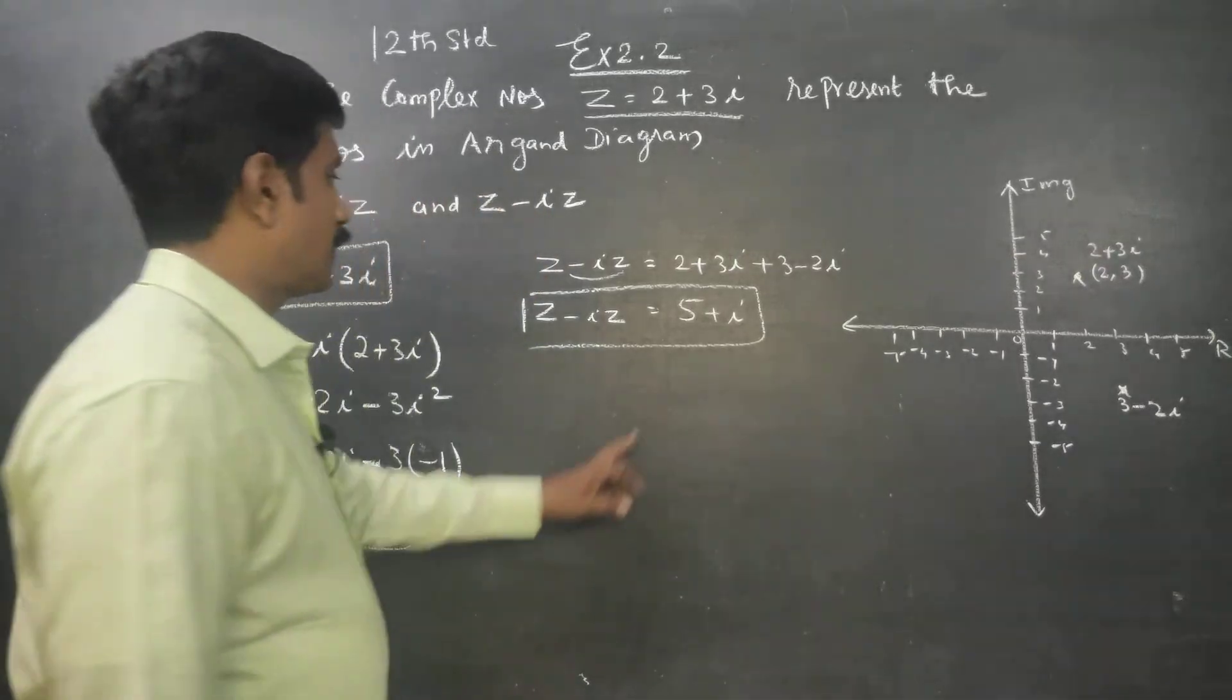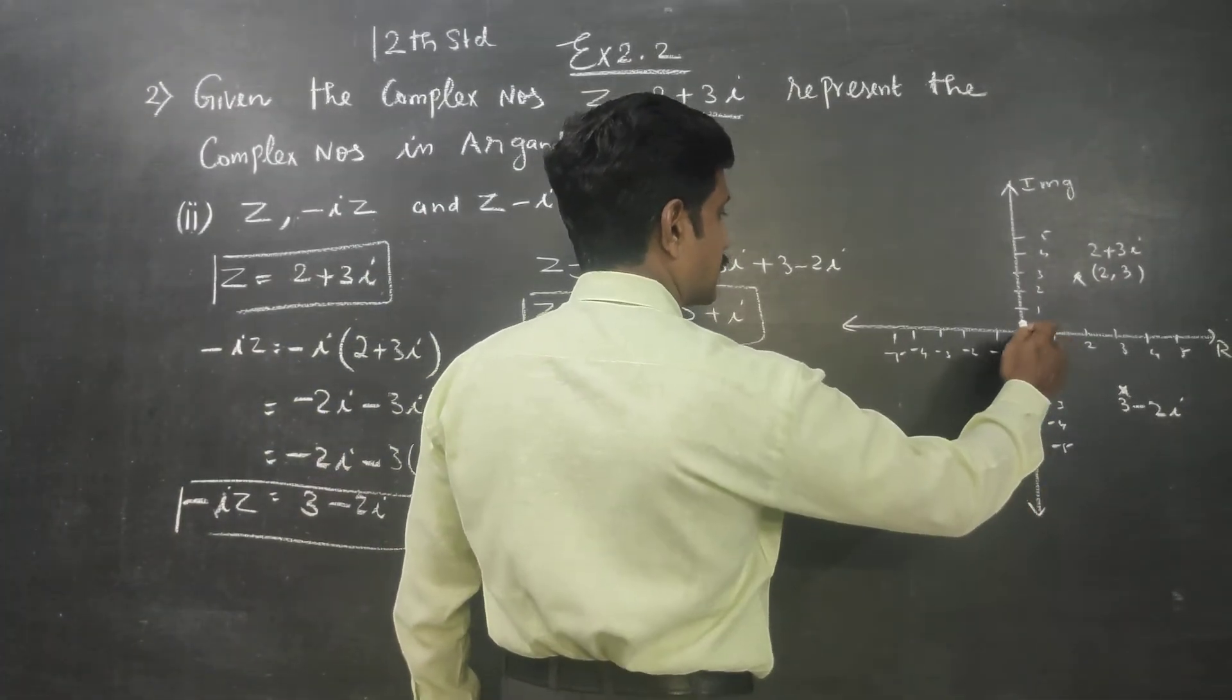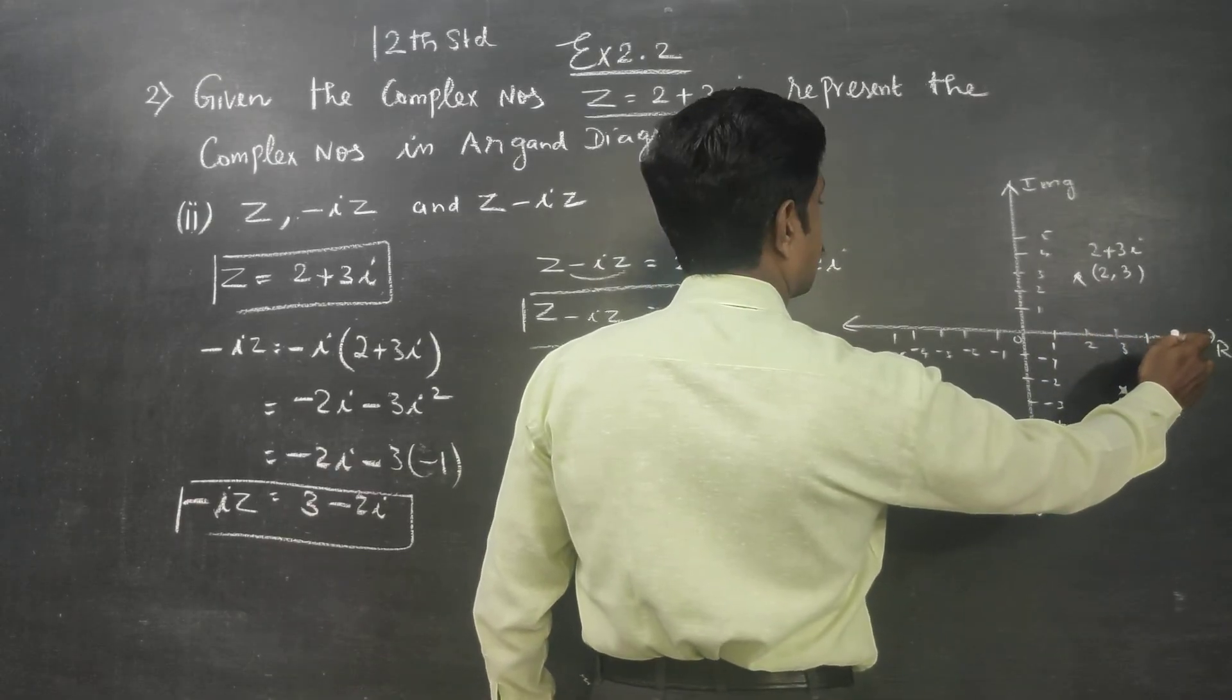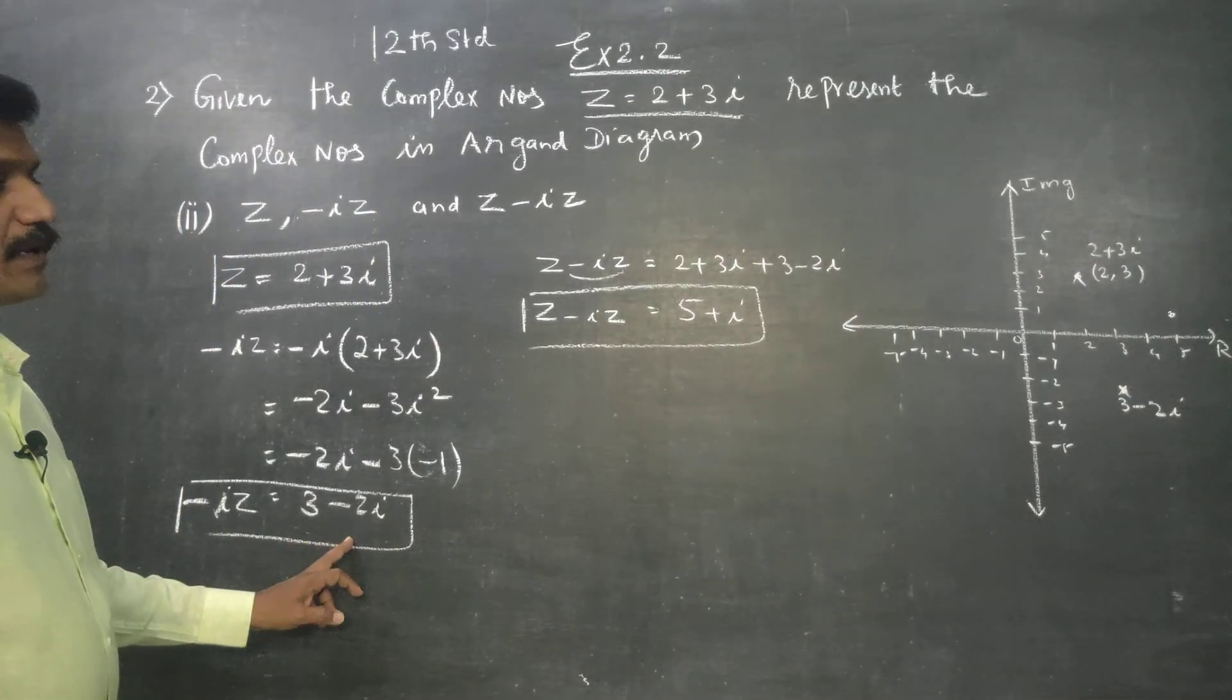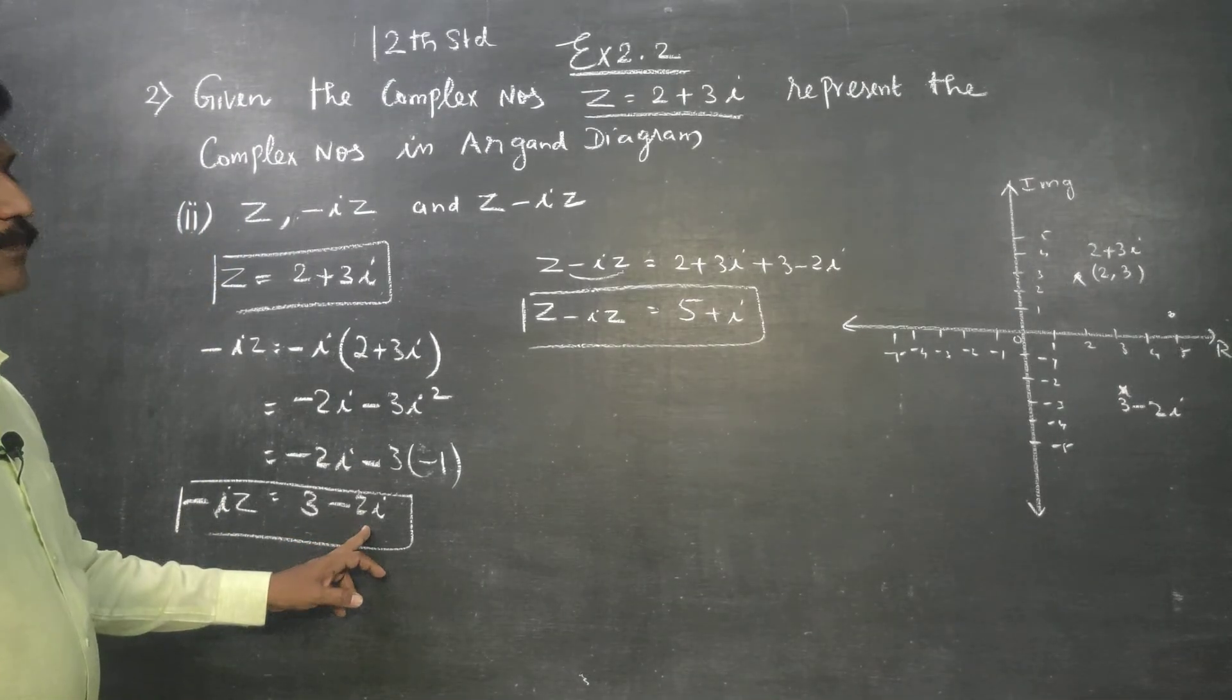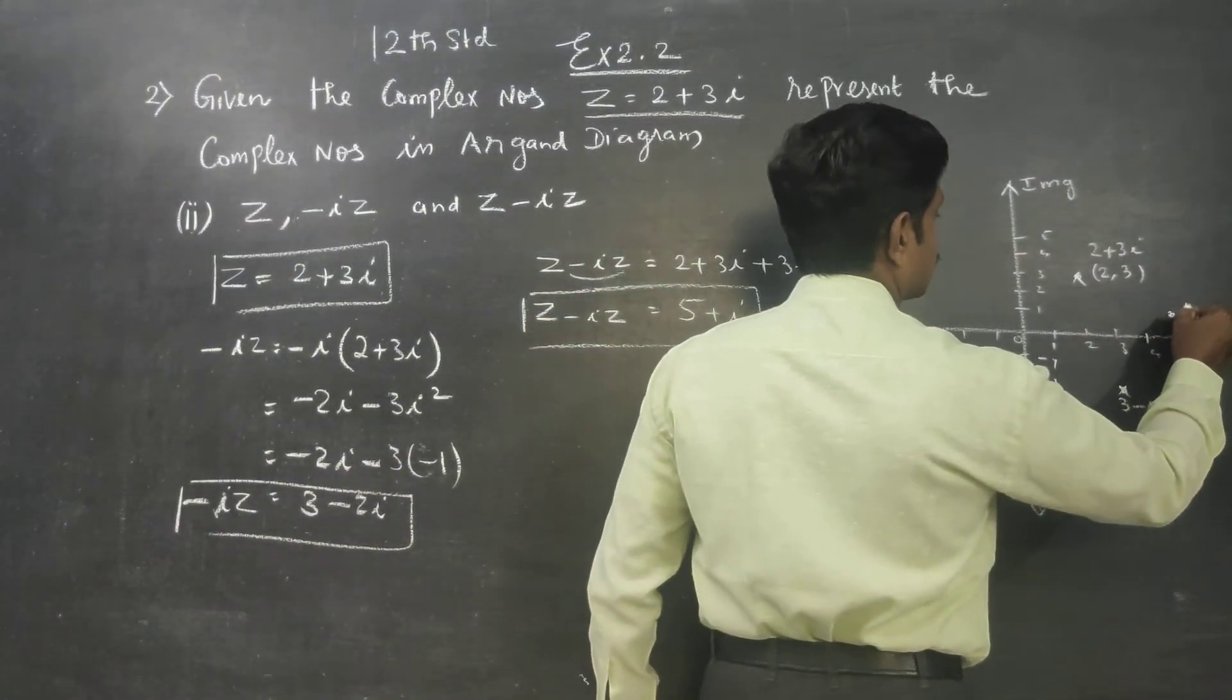Then third point: 5 plus i. To draw, 5 plus i. The x-axis value is 5 plus i. So this is 5 plus i.